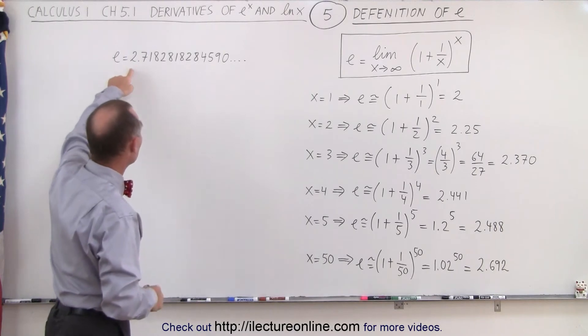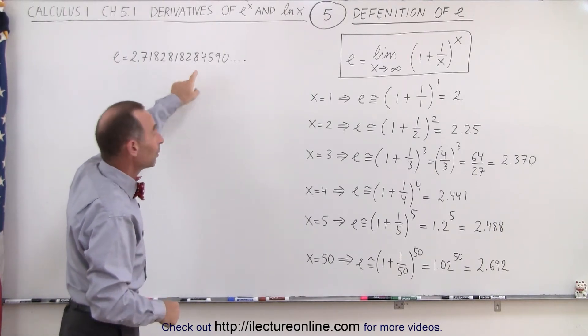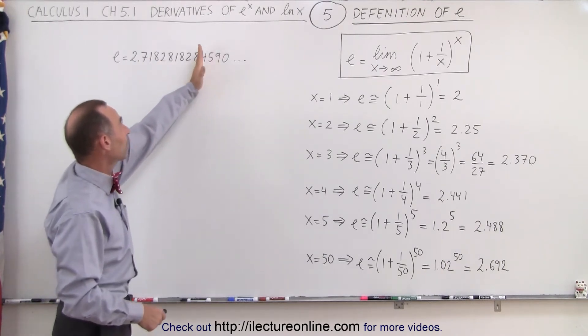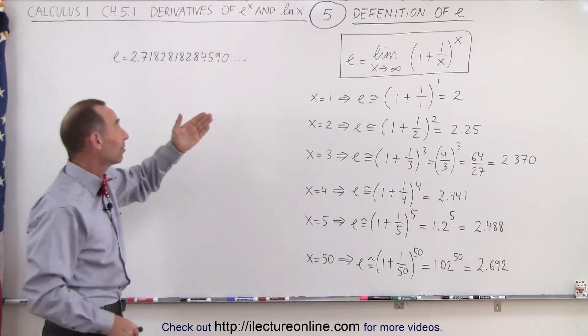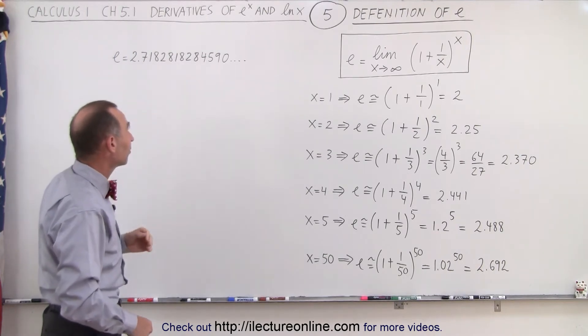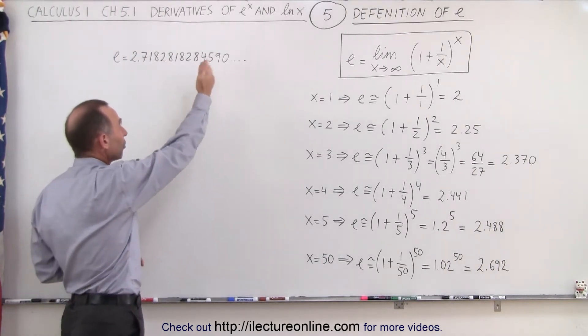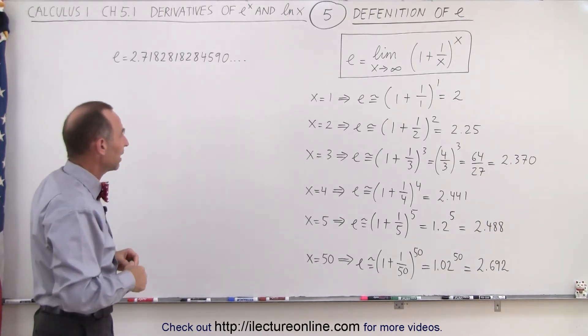Now here I have the number e written to even more decimal places to indicate that it's not repeating 18281828 because if you stop right here, it almost seems as if you have this repetitive sequence, but that's not the case. Notice that it then begins to change and the numbers seem to come out quite random after that.